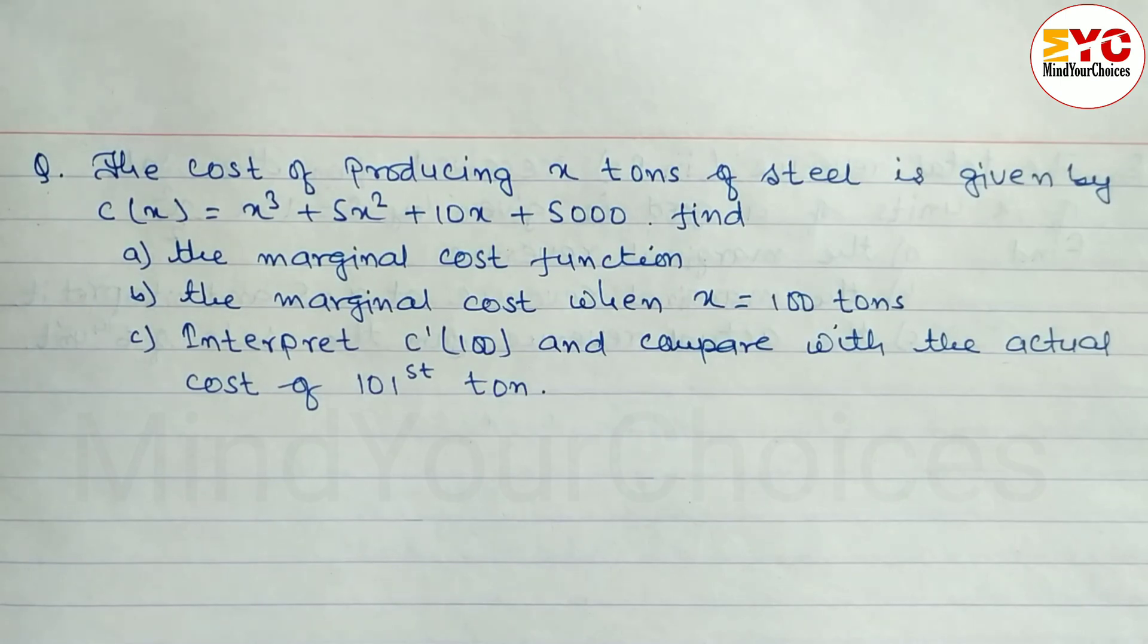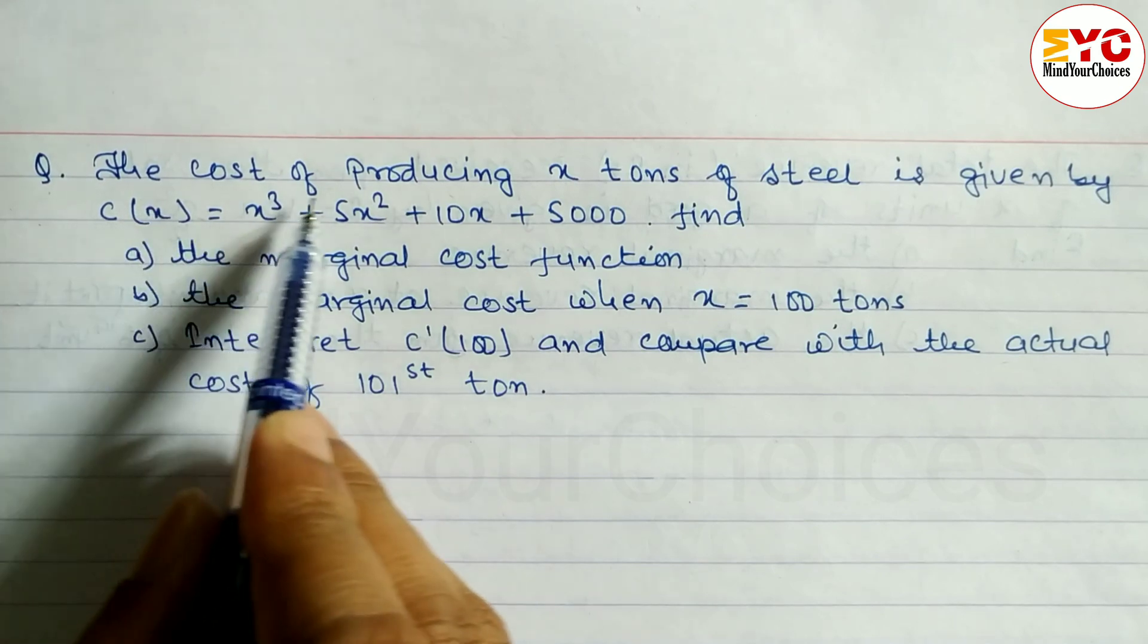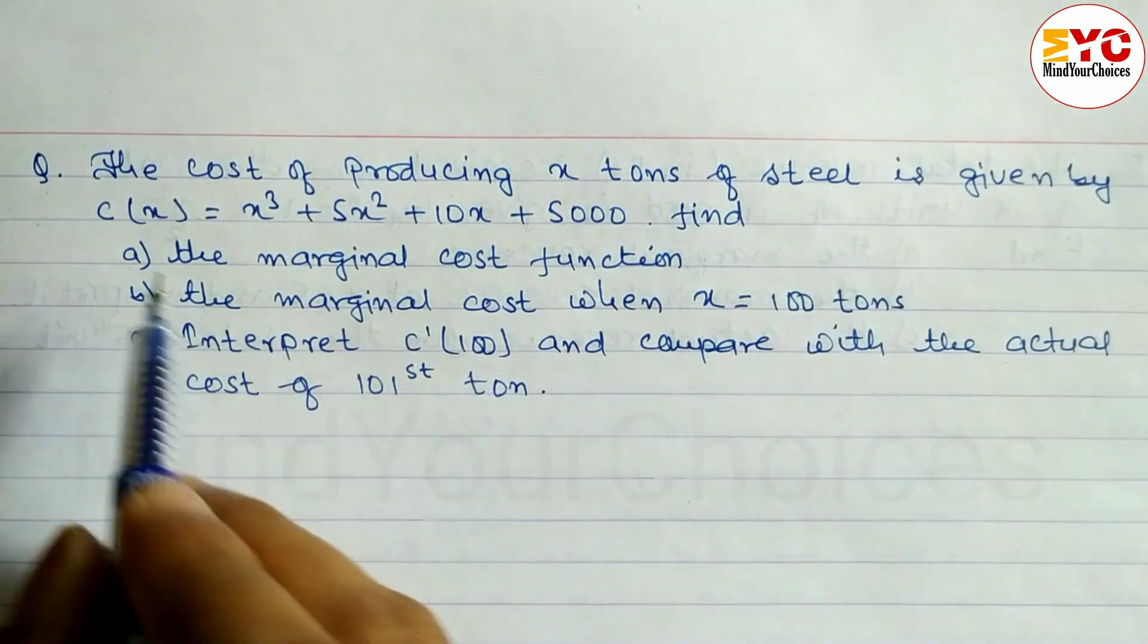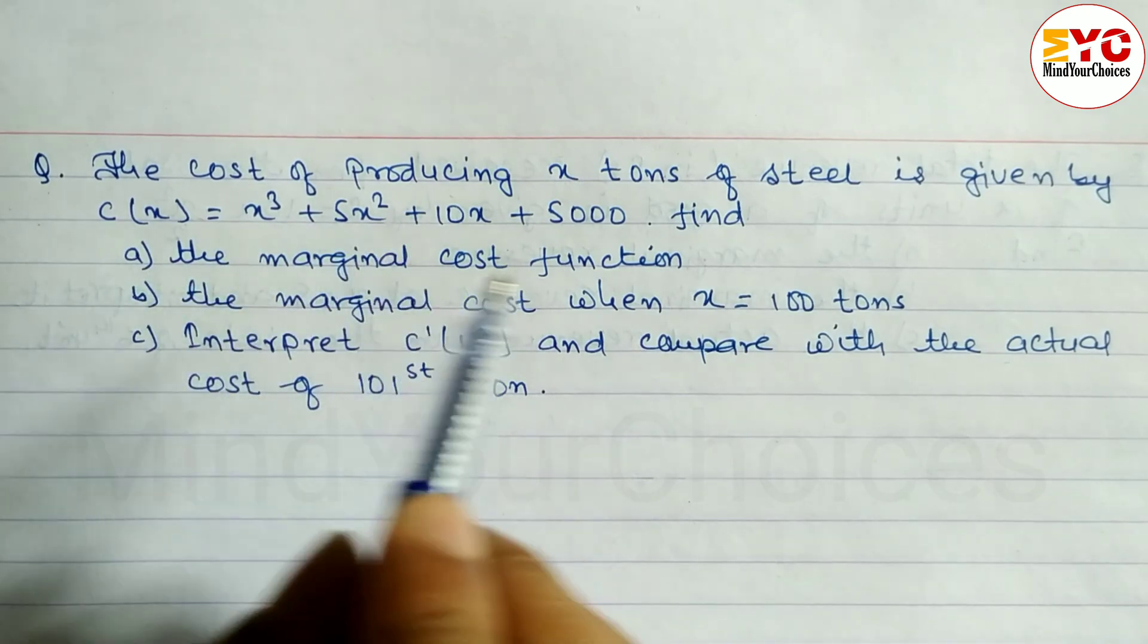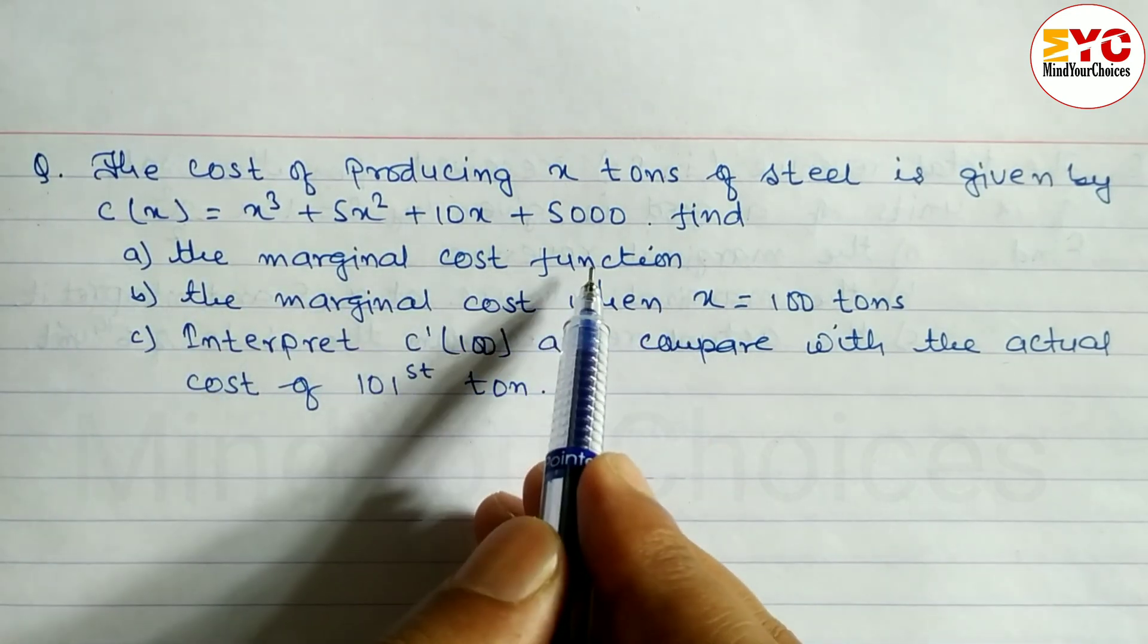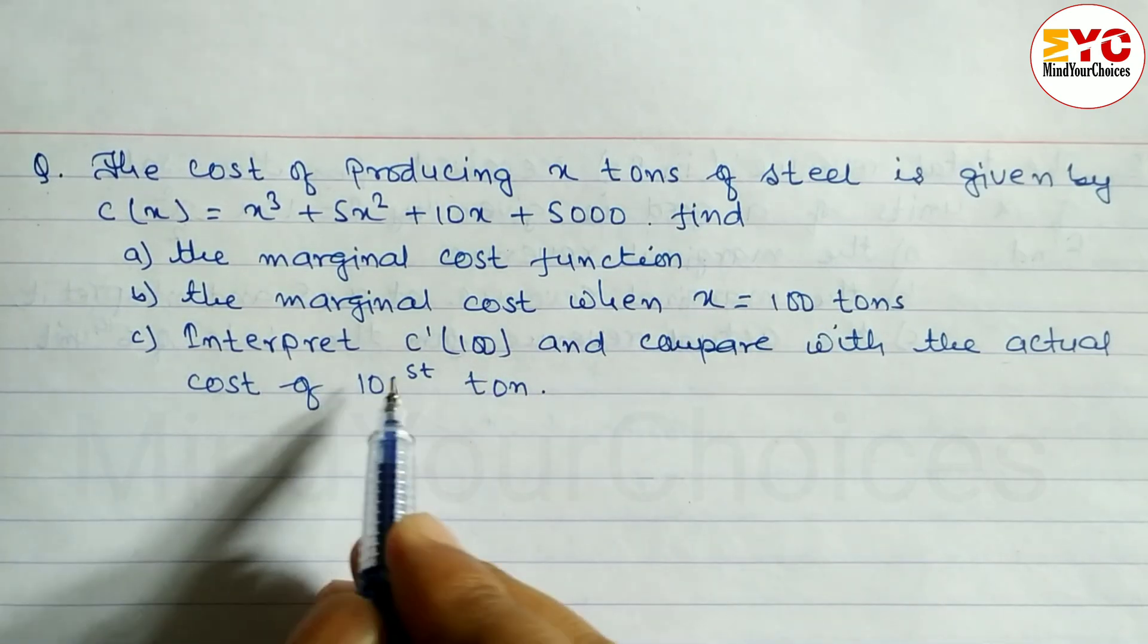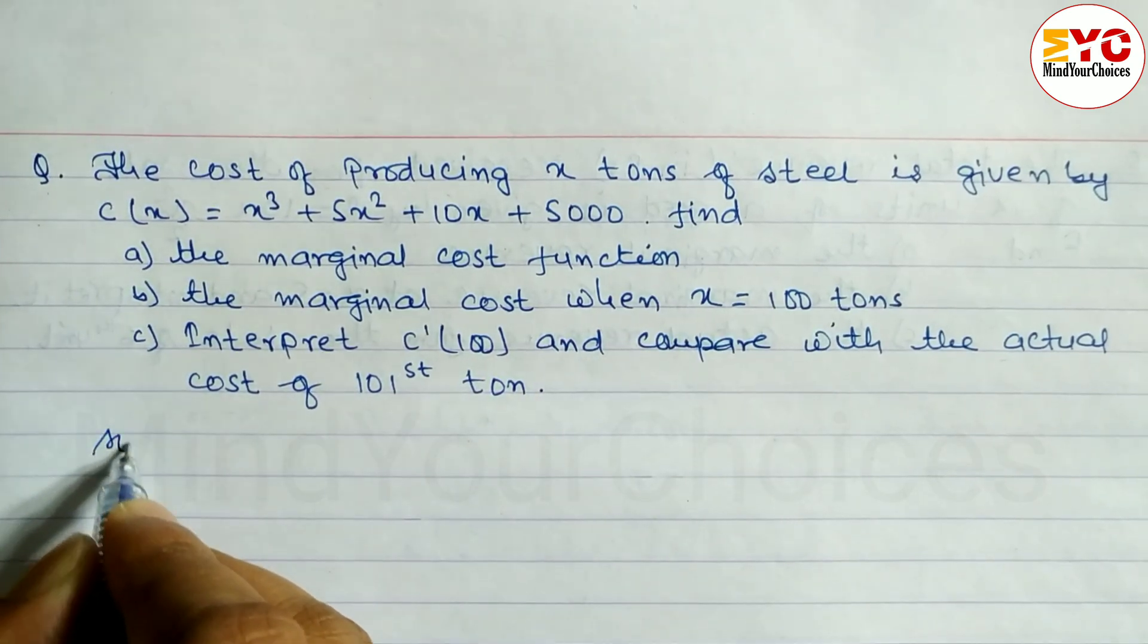This is a class 11 application of derivatives question. The cost of producing x tons of steel is given by the cost of production function. Find the marginal cost function, the marginal cost when x is equal to 100 tons, and interpret it. So let's start here.